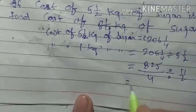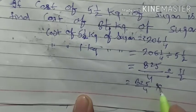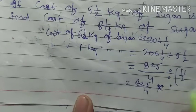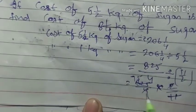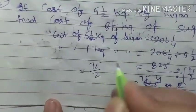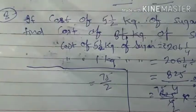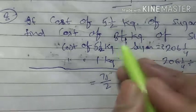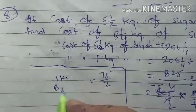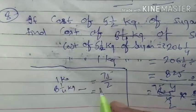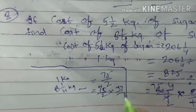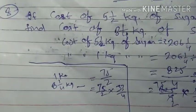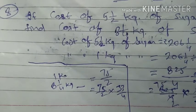उसके बाद second number का reciprocal लिखेंगे और cancel out करेंगे। 11×7=77, 11×5=55 — तो 75 upon 2 हमारी 1 kg की cost है। अब 8 whole 1 upon 4 kg की cost find करनी है, तो 75 upon 2 को 8 whole 1 upon 4 से multiply करेंगे। 8¼ को improper में convert करें: 4×8+1 = 33 upon 4. Cancel out करके solve करने पर हमें answer मिलेगा। Question number 9 is same as question number 8, so you can do that question yourself. If you face any problem, then you can ask me. Thank you very much.